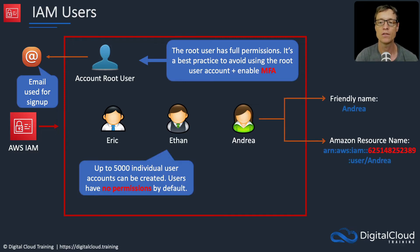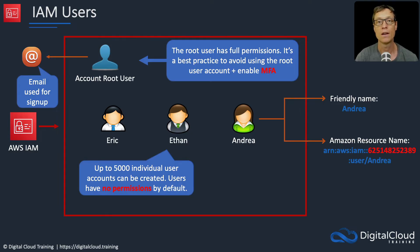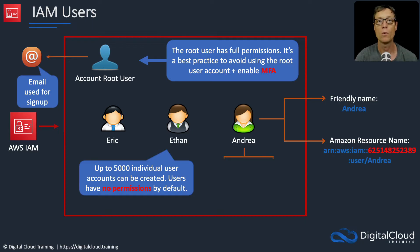There are a couple of different names associated with a user. You have the friendly name — whatever the name of the account is — and then we have the Amazon Resource Name (ARN). The red portion is the account ID, and the rest indicates the particular identity within that account. An ARN is unique not just within accounts but across accounts as well, because it contains that unique account identifier.